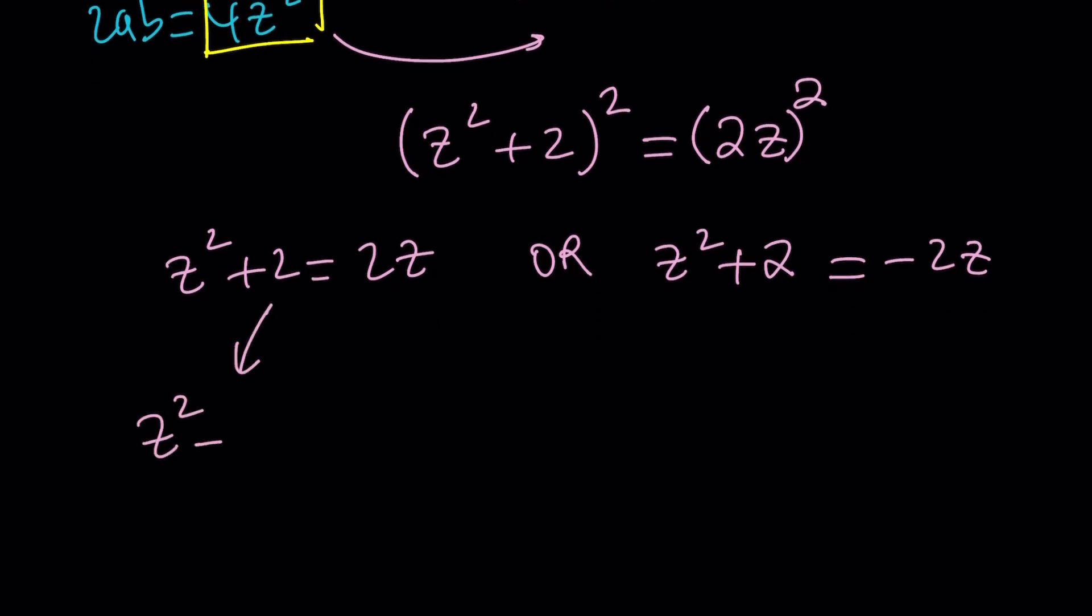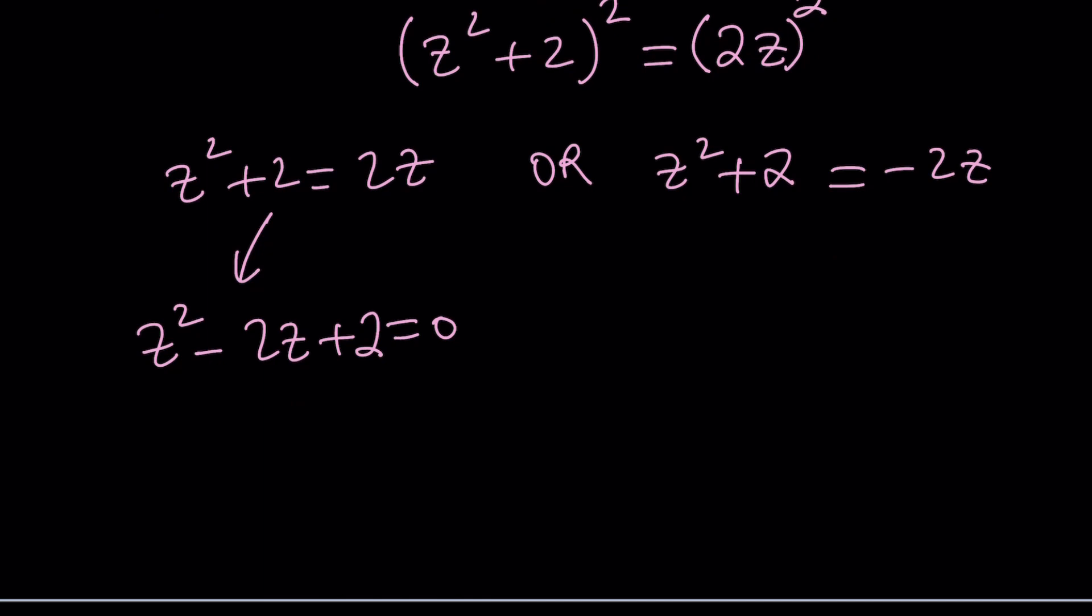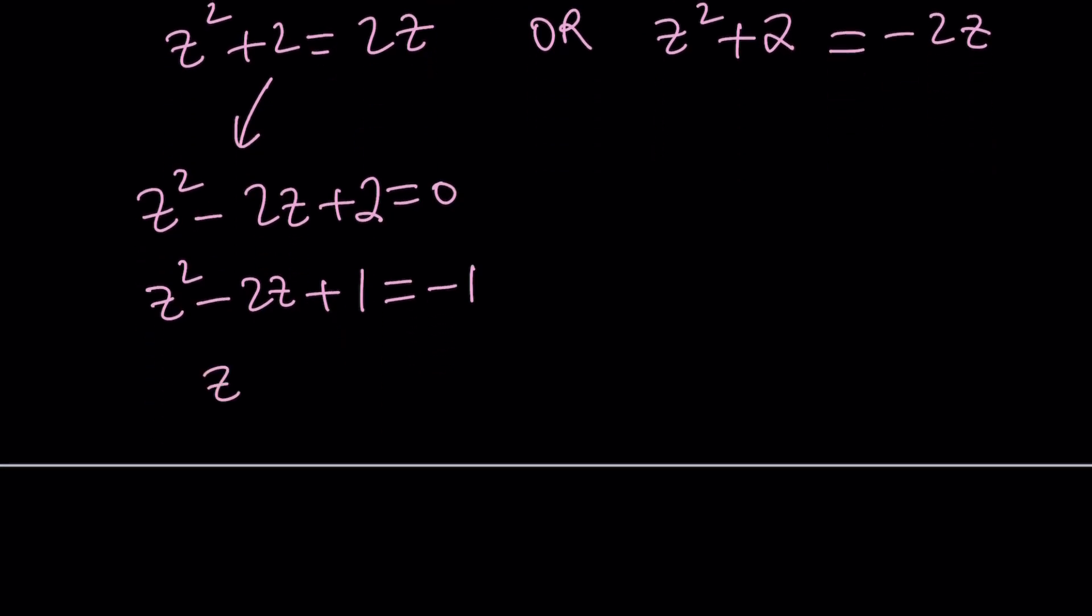Let's solve each one. z squared minus 2z plus 2 equals 0. And this one is actually easy to solve. Any method is fine. It's not factorable, but quadratic formula is fine. You can do completing the square. This is kind of easy. Let's do it. I can write this as z squared minus 2z plus 1 equals negative 1, putting one of the ones on the right-hand side. And then the left-hand side is just z minus 1 squared equals negative 1.